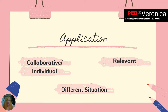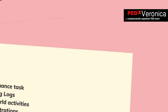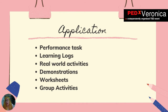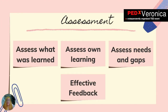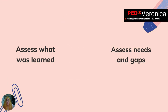In the application component, the teacher should create an activity relevant to learners, who must apply the knowledge they have gained in different situations — whether collaborative or individual. Activities can include performance tasks, learning logs, real-world activities, demonstrations, worksheets, and group activities. In the assessment part, the teacher should assess what has been learned, determine needs and gaps in understanding, and provide an avenue for learners to assess their own learning. Effective feedback is important so learners know what to further develop.